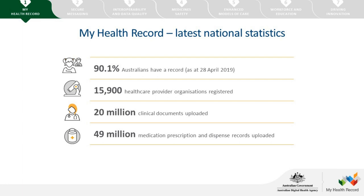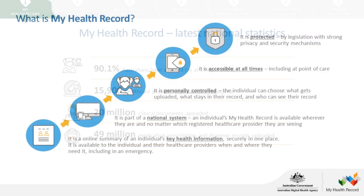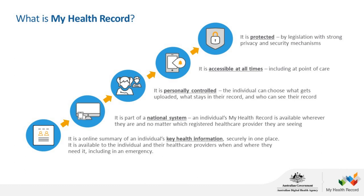What is the My Health Record? It is a summary of the individual's key health information. It is part of a national system. It is personally controlled — consumers have a say as to whether they have a My Health Record, what is in it, and who can access it. It is accessible at all times, private, protected by legislation — primarily the My Health Record Act — and secure through multiple layers of international best practice IT security. We have a cyber security centre which monitors, maintains and improves the system 24/7.